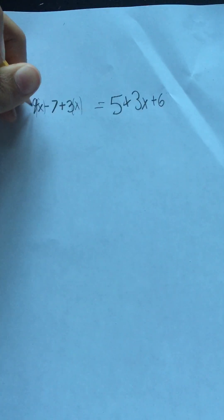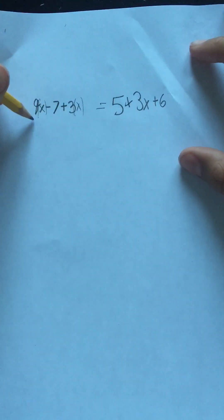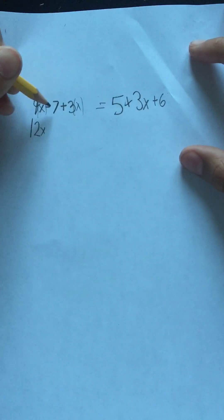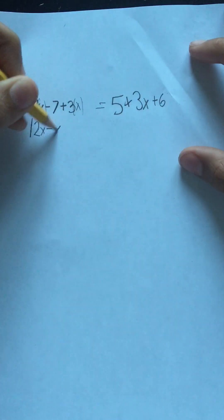Now, we have 9x minus 7 plus 3x. We know we can simplify this because x on 9 and 3 are both similar. So, if they have the same terms, 9x plus 3x is equal to 12x, and we don't do anything to the 7, so we can just bring it down.